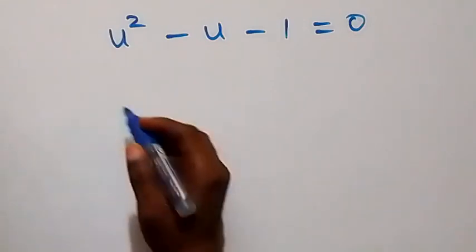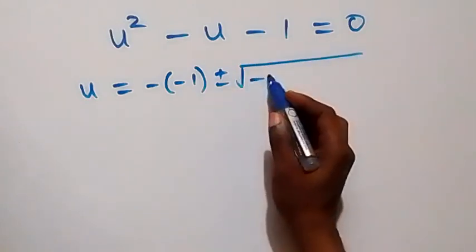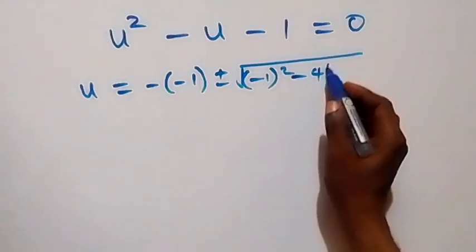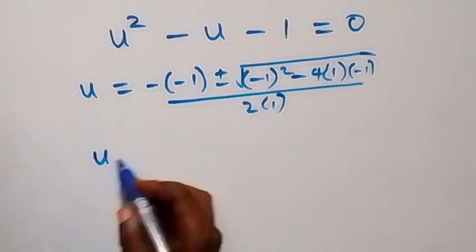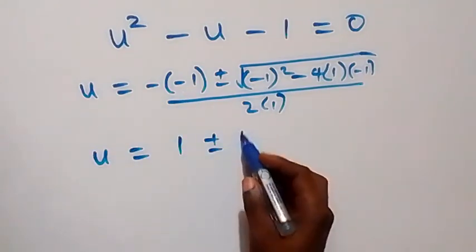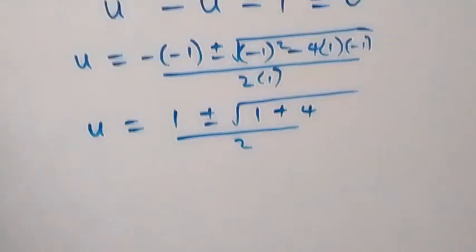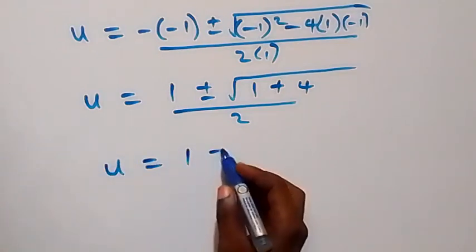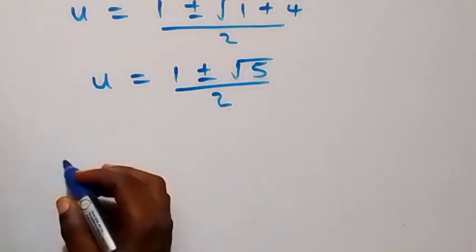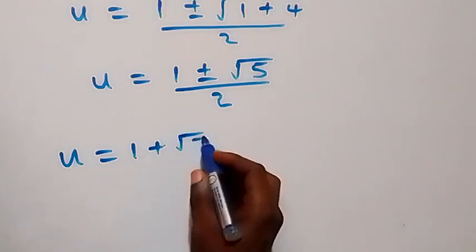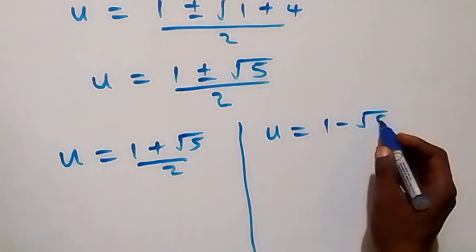We solve this quadratic equation using the quadratic formula. We have u equals minus minus 1, plus or minus square root of minus 1 squared minus 4 times 1 times minus 1, over 2 times 1. This gives u equals 1 plus or minus square root of 1 plus 4, over 2, which is u equals 1 plus or minus root 5 over 2. So the two possible values are u equals 1 plus root 5 over 2, and u equals 1 minus root 5 over 2.